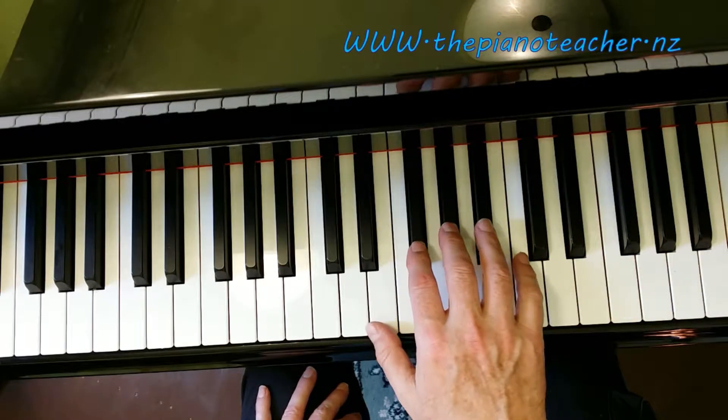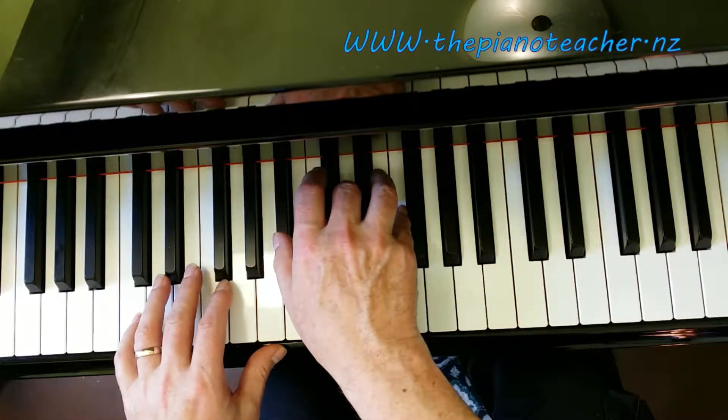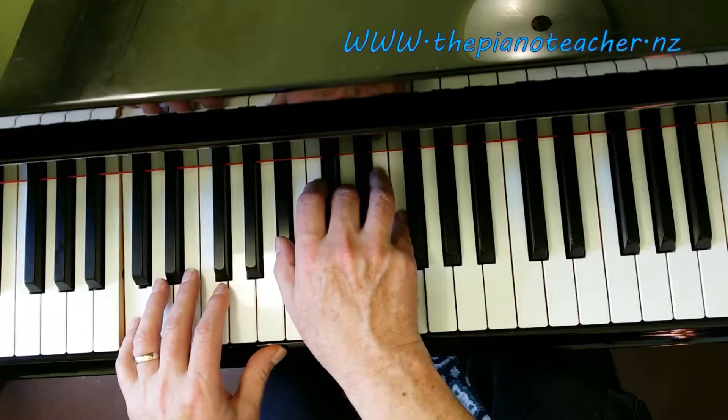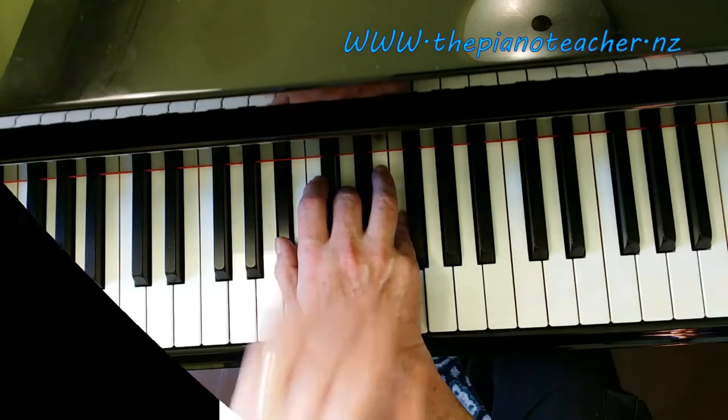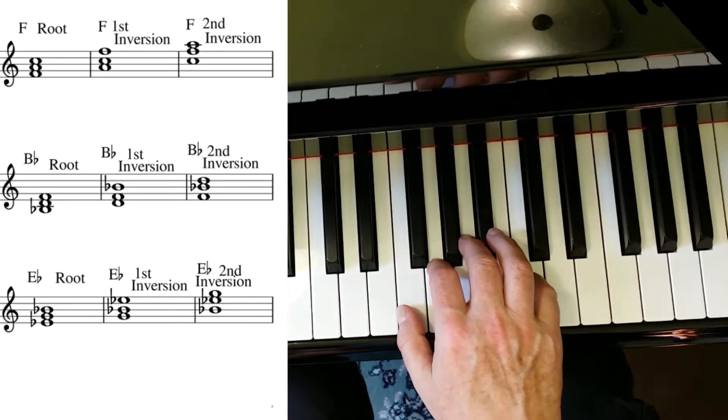They can also produce some more sophisticated sounds by moving your bass notes. That changes the chord completely, but in this hand we still just have a Bb triad. So, how do you make your triads?